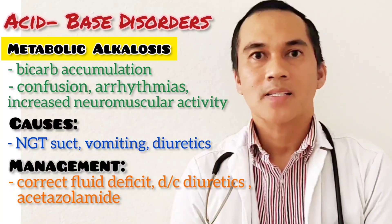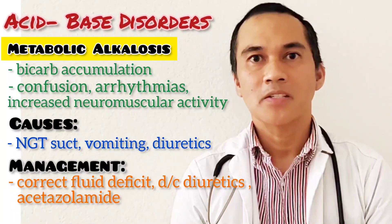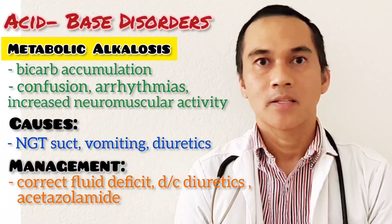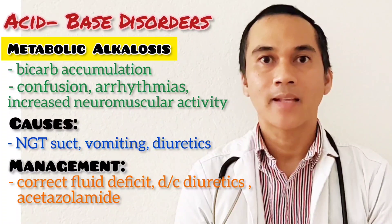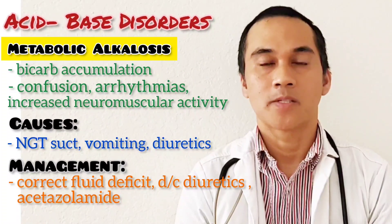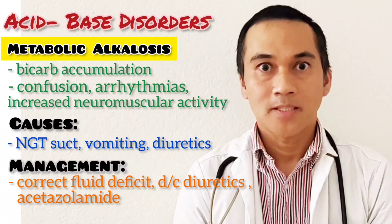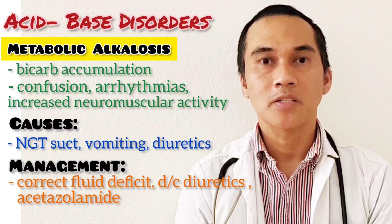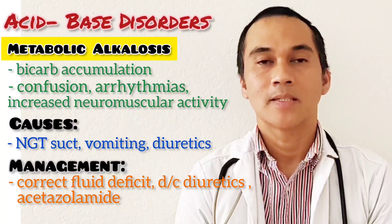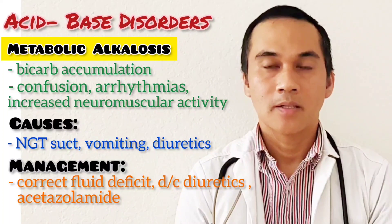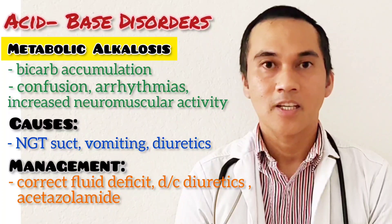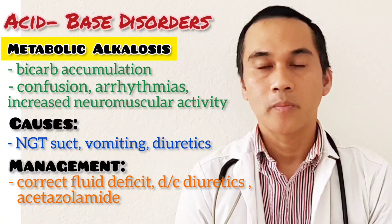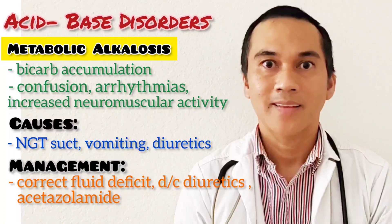Now we are on the last acid-base disorder: metabolic alkalosis. This is the loss of acid and accumulation of bicarbonate. Clinical presentation includes confusion, arrhythmias, and increased neuromuscular activity. It is associated with vomiting, NGT suctioning, and diuretics — your loop diuretics and thiazides.